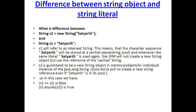Whenever in my Java program I want to use the value 'Satyarth', it will be reused from the string pool, and hence the JVM need not create a new object for 'Satyarth'. So it is basically caching of the string, while in the other case, whenever we use the new operator, it creates a new string object in the JVM.